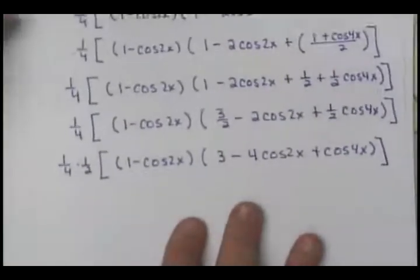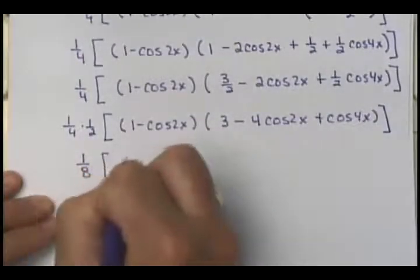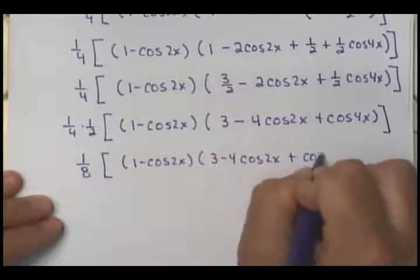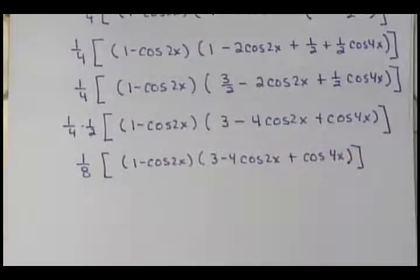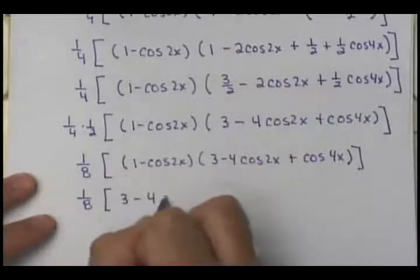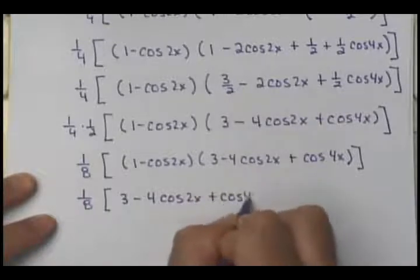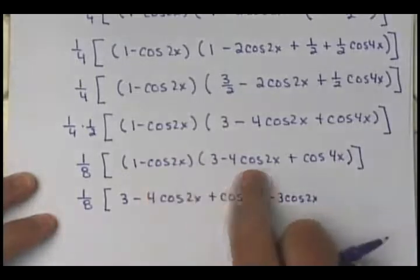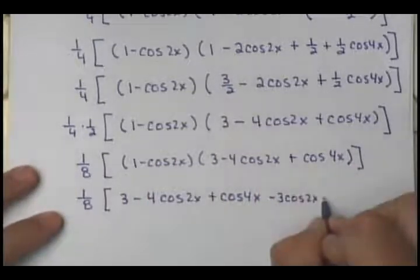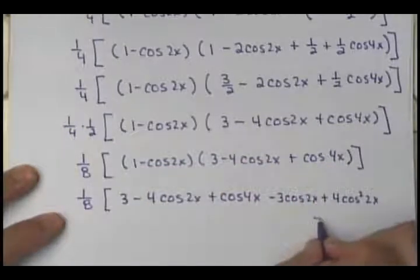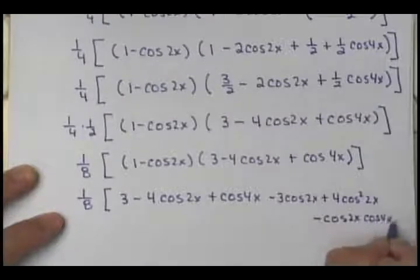So now I've got 1 eighth times (1 minus cosine 2x) times (3 minus 4 cosine 2x plus cosine 4x). We need to multiply this out. 1 times all of that copies over: 3 minus 4 cosine 2x plus cosine 4x. Then negative cosine 2x times 3 is negative 3 cosine 2x. Negative cosine 2x times negative 4 cosine 2x is 4 cosine squared 2x. And negative cosine 2x times positive cosine 4x is negative cosine 2x cosine 4x.